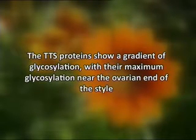The reduced TTS protein levels resulted in reduction of pollen tube growth through the transmitting tissue of the pistil. The TTS proteins show a gradient of glycosylation with their maximum glycosylation near the ovarian end of the style. Thus, it is proposed that pollen tubes grow along this gradient of increased TTS glycosylation. Furthermore, pollen tubes have been found to deglycosylate TTS proteins, releasing sugar molecules implicated for pollen tube nutrition and growth.